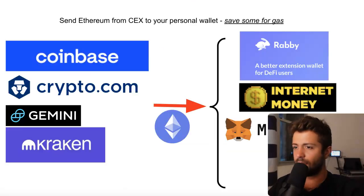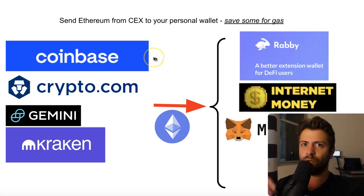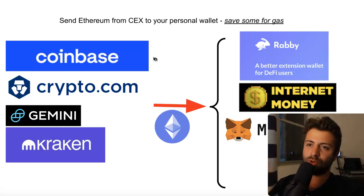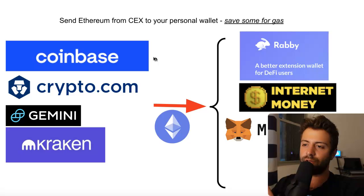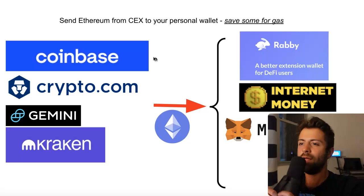Getting back to the bridge — I'm assuming you guys have already done step one: you need to get a personal crypto wallet, something where you know your own private keys. Your private keys are a 12-word seed phrase — 12 words that you write down and store offline somewhere safe. If you don't already know about this, I have a full video tutorial and an entire course about how to do all this.